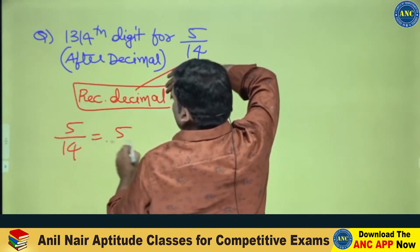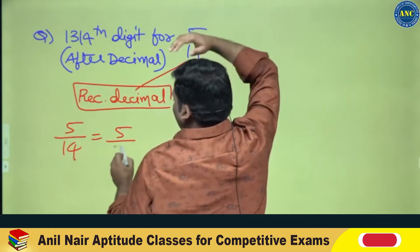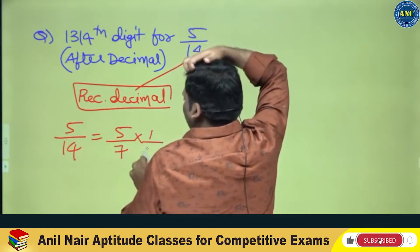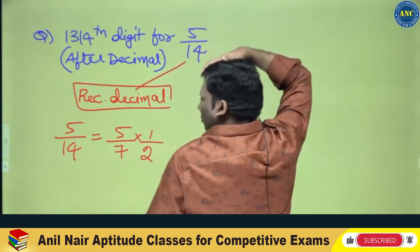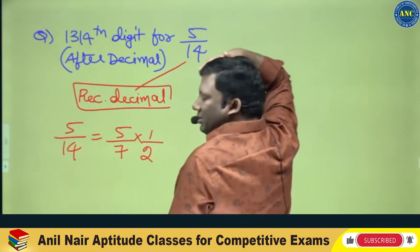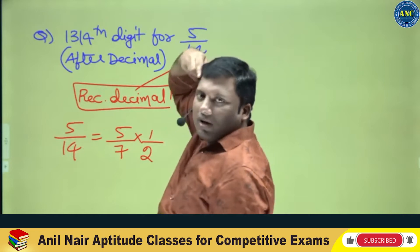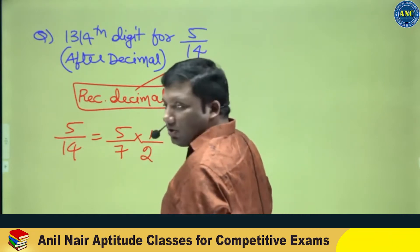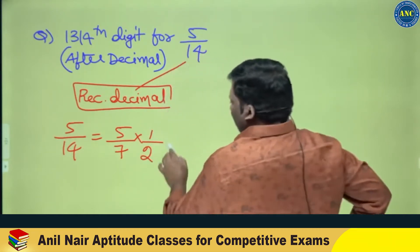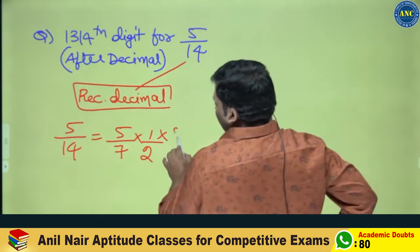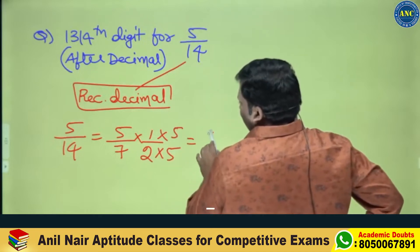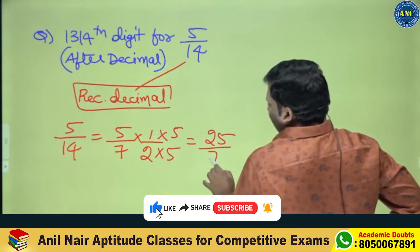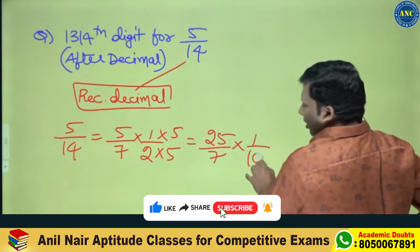5 by 14 — this is 5 by 7 into 1 by 2. I hope the idea is clear. If I multiply by 5, this will be 25 by 7 into 1 by 10.